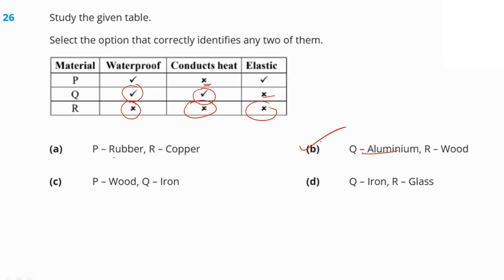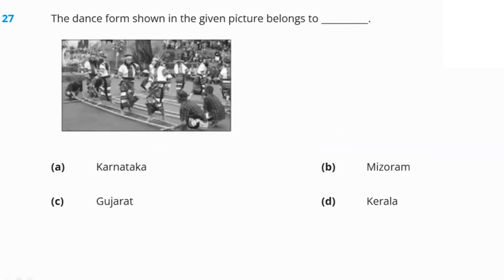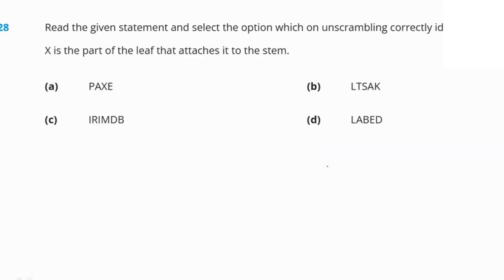The dance form shown in the given picture is the bamboo dance, which is performed in Mizoram. Option B is the right answer.